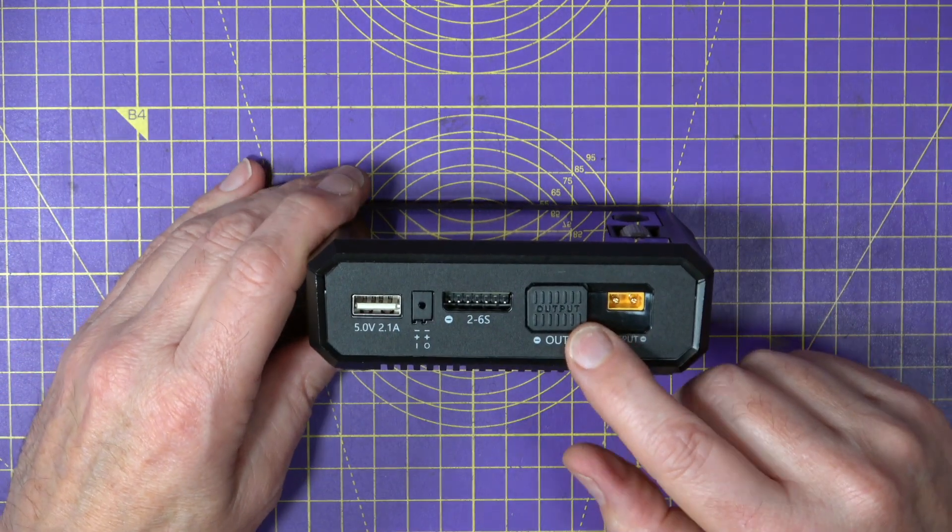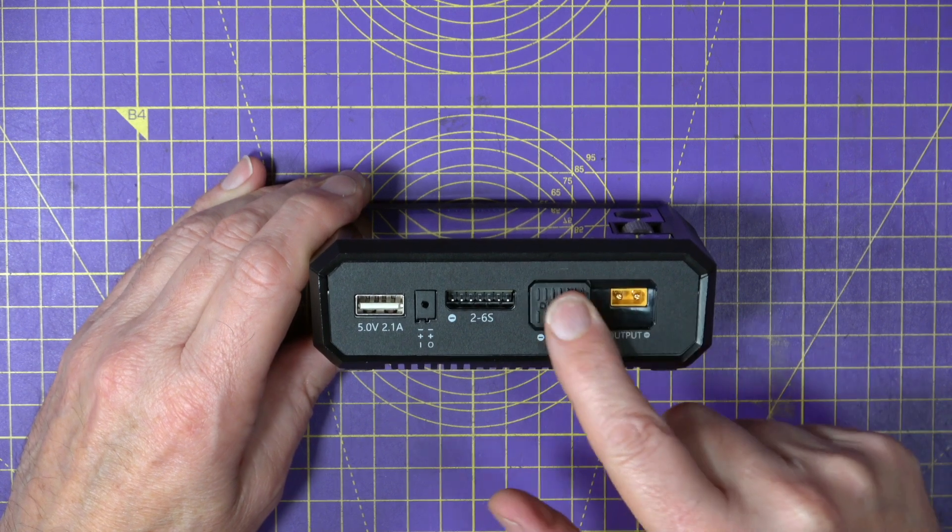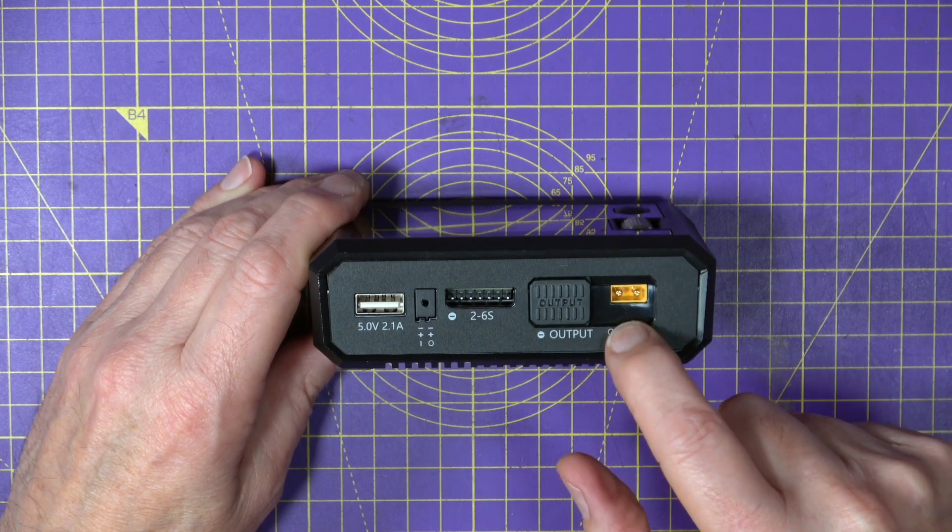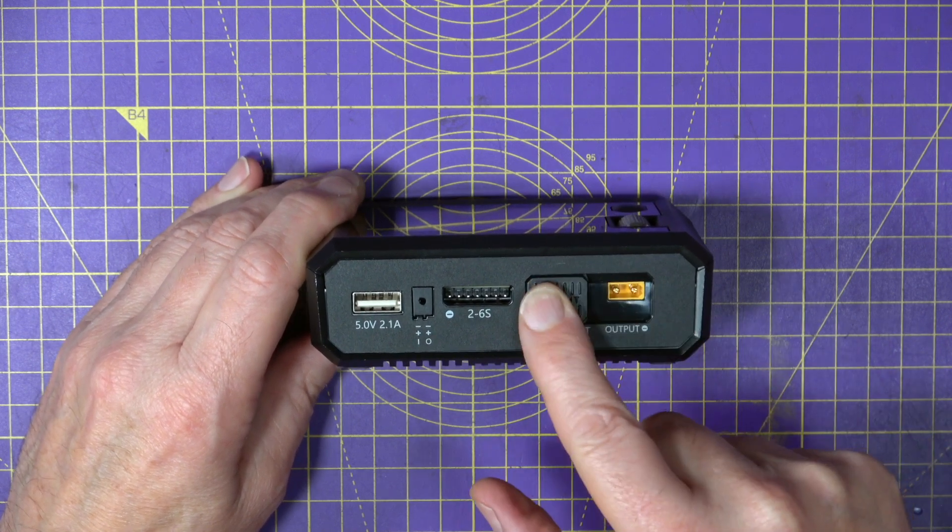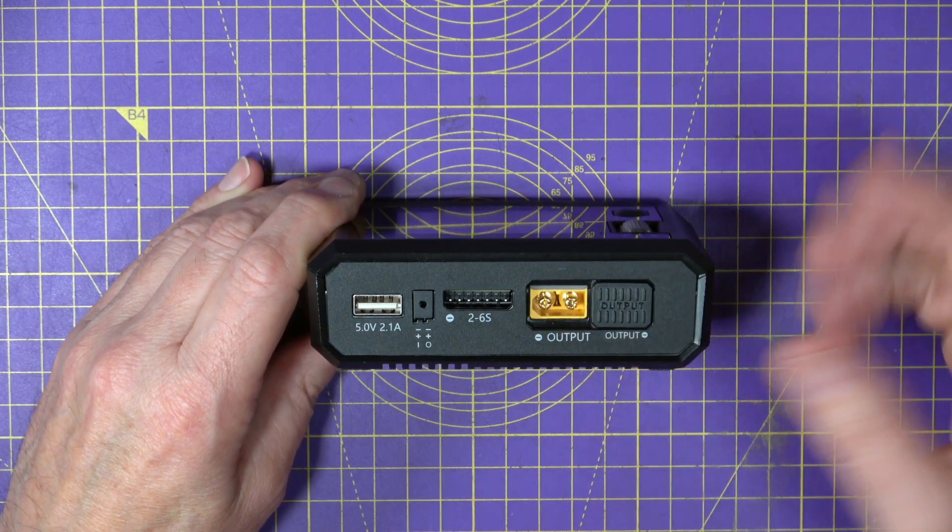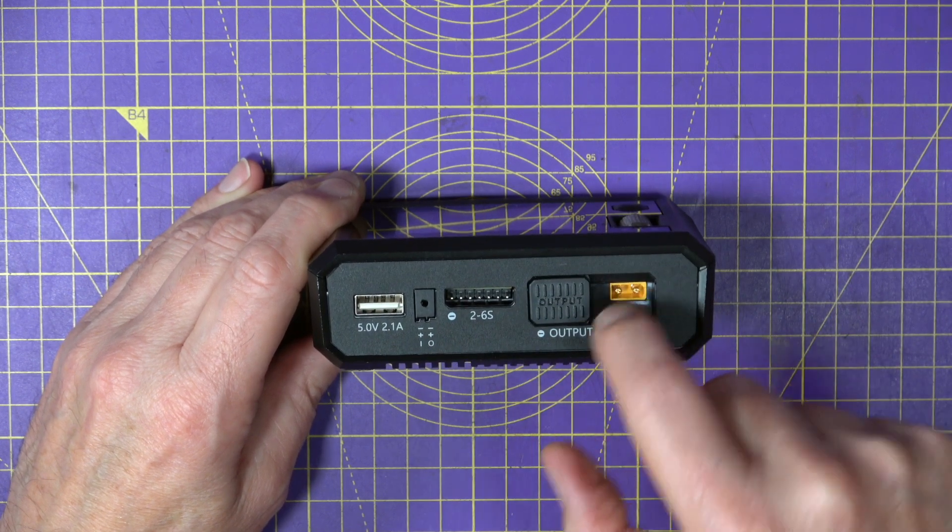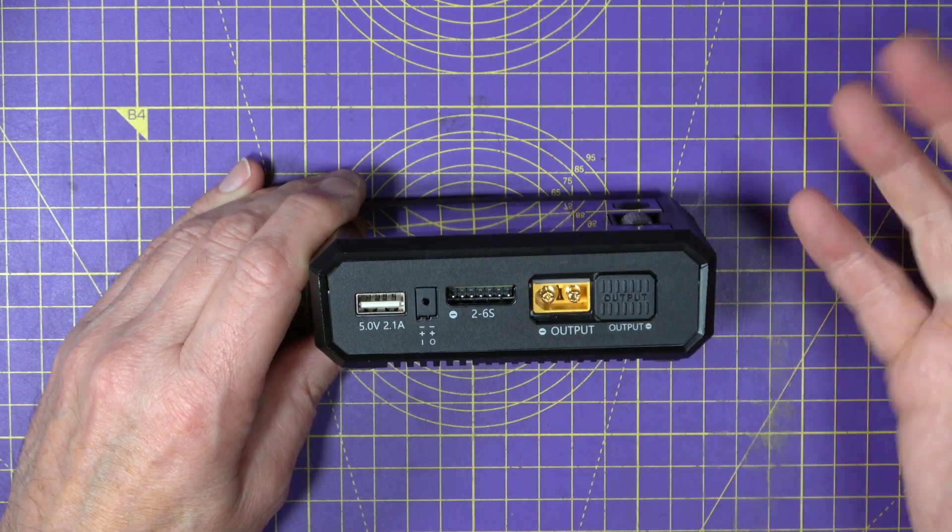And on this side there's an XT60 and an XT30 connector main port with this neat slide cover to stop you plugging in two batteries at once. It's quite clever. So there's no more adapters needed because you can use XT30 directly or XT60 whichever you like.